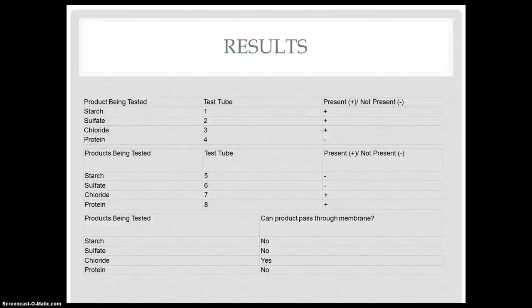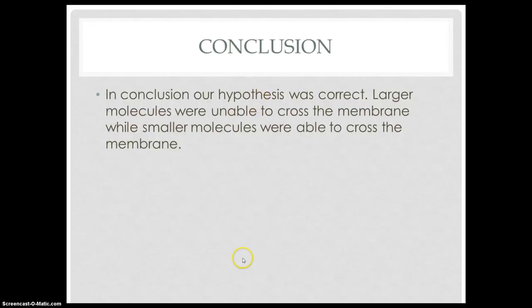Chloride ions tested positive in the beaker fluid and also positive in the dialysis tube, meaning chloride is small enough to pass through the membrane. Protein tested negative in both the beaker fluid and the dialysis tube, meaning protein is too large to pass through the membrane. In conclusion, our hypothesis was correct: larger molecules were unable to cross the membrane, while smaller molecules were able to cross the membrane because the artificial membrane was based on size.